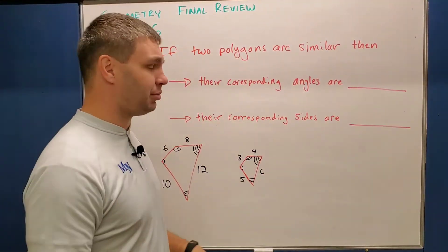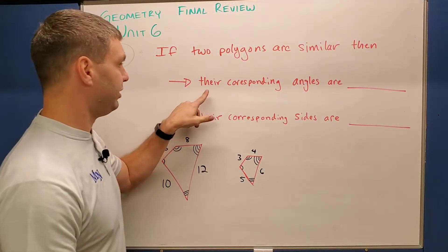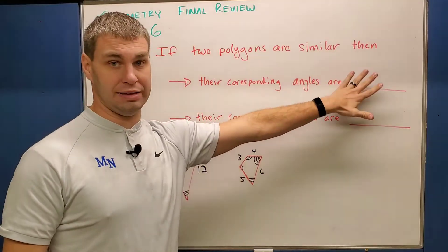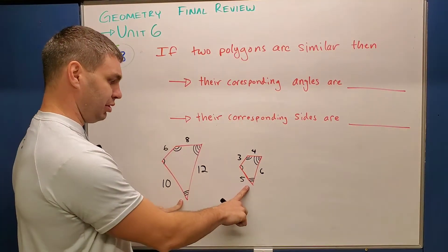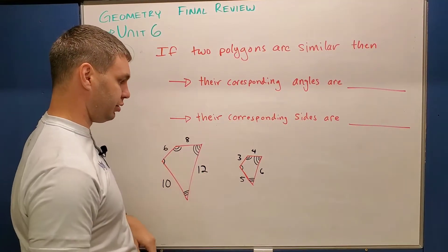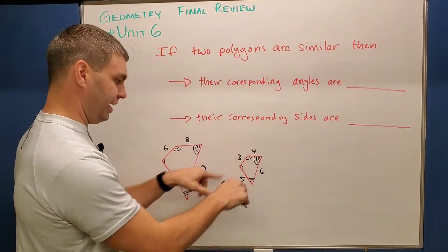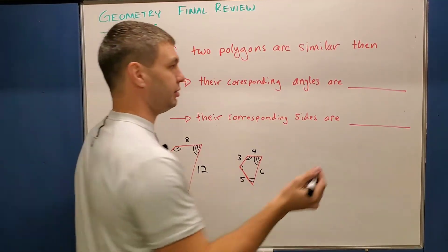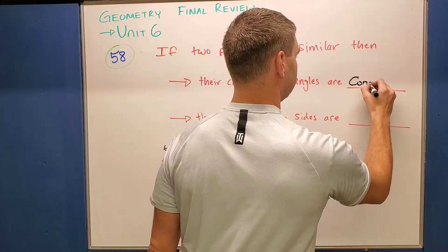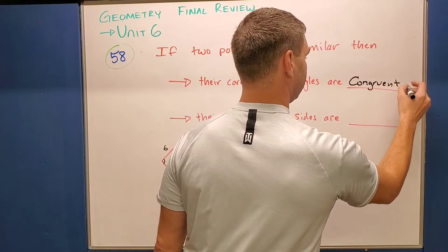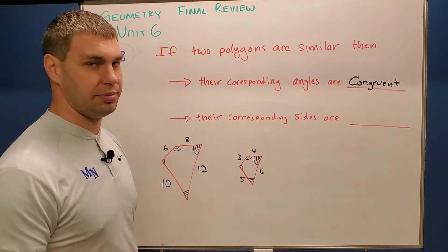This says if two polygons are similar, then their corresponding angles are what? Well, I drew two similar polygons down here. These are just a couple of quadrilaterals and you can notice that all their angles are congruent. In similar polygons, all their angles are going to be congruent.